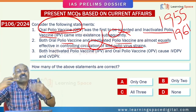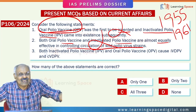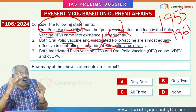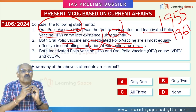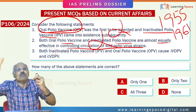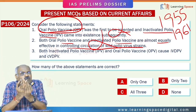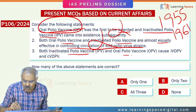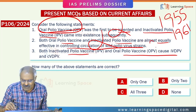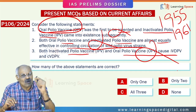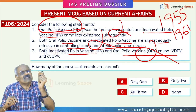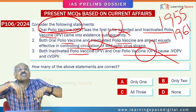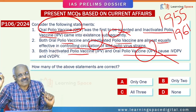Once a country eradicates wild polio virus, it should shift to IPV, because oral polio vaccine in rare cases — about one in two million — may cause immunodeficiency vaccine-derived polio virus (iVDPV) and circulating vaccine-derived polio virus (cVDPV). The statement that both IPV and OPV cause iVDPV and cVDPV is wrong — only OPV does in rare cases.